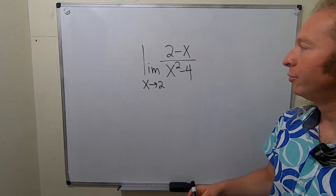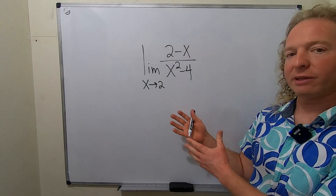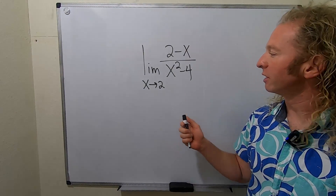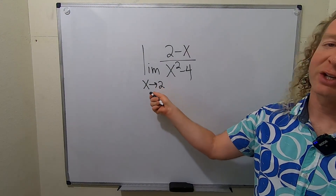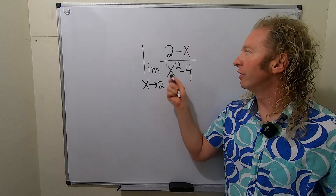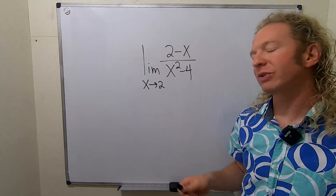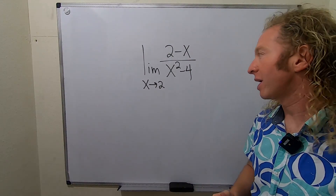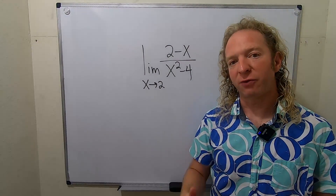Hey everyone, in this video we're going to evaluate this limit. It's the limit as x approaches 2 of (2 minus x) over (x squared minus 4).